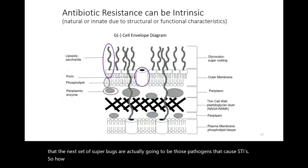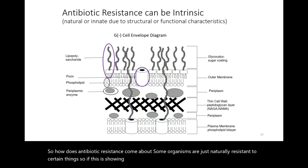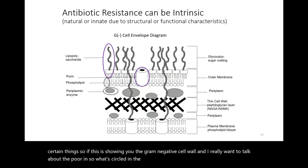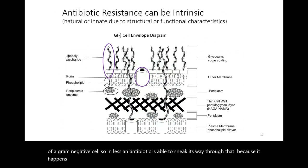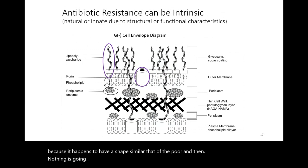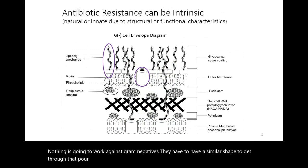Antibiotic resistance can arise in several ways. Some organisms are naturally resistant to certain things. In gram-negative cells, porins regulate what goes in and out of the cell. Unless an antibiotic has a shape similar to what the porin allows through, it cannot enter the cell to kill or inhibit a gram-negative organism. These porins give gram-negative bacteria some intrinsic resistance.